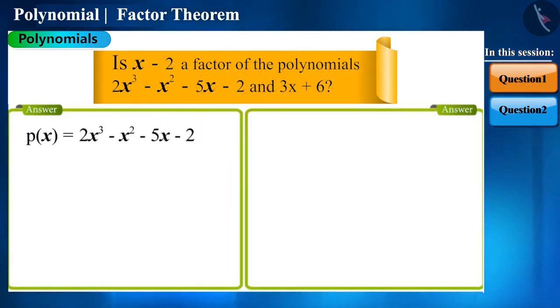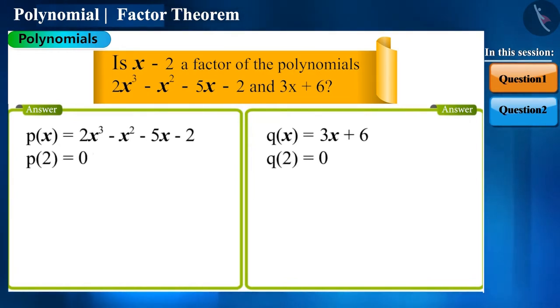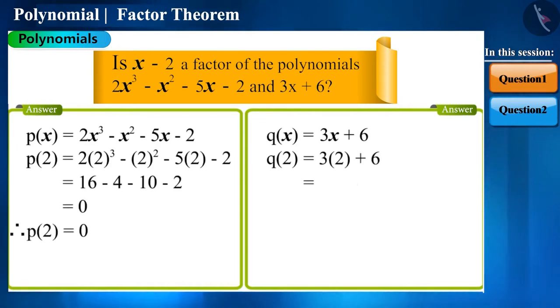That is, if we write both these polynomials this way, we have to check whether p of 2 and q of 2 are 0 or not. So let's check. In both the polynomials, x has to be replaced by 2.